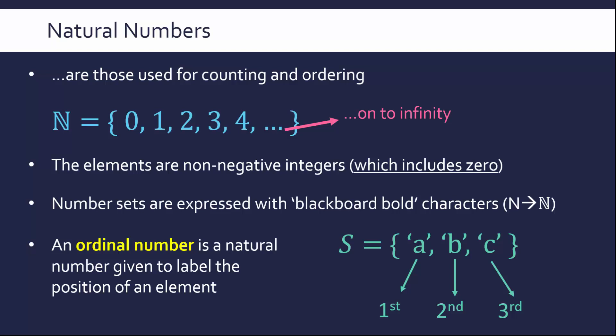Likewise, in programming we have arrays, except we start counting from zero. So we kind of have a zeroth item in an array, but it's the same idea. We're counting and we're labeling a position.